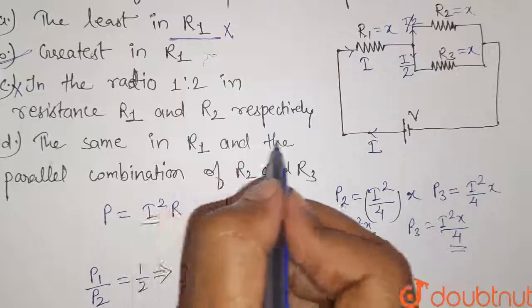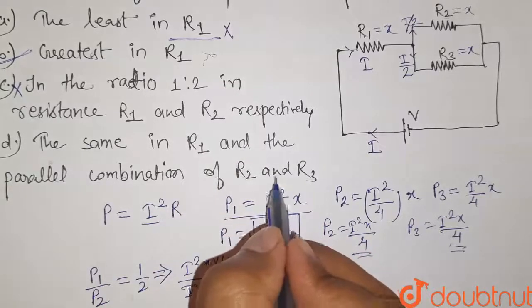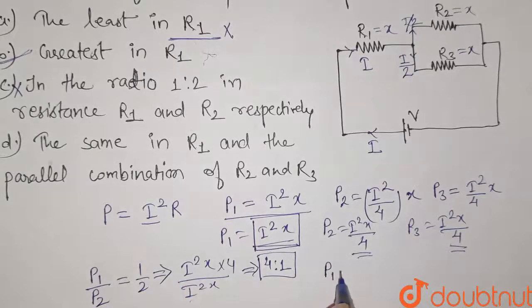The same in R1 and the parallel combination of R2 and R3. So it is given that the power dissipated by R1, that is P1, is equal to the power dissipated by the parallel combination of R2 and R3.